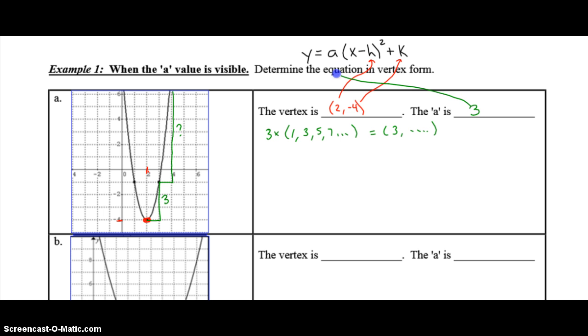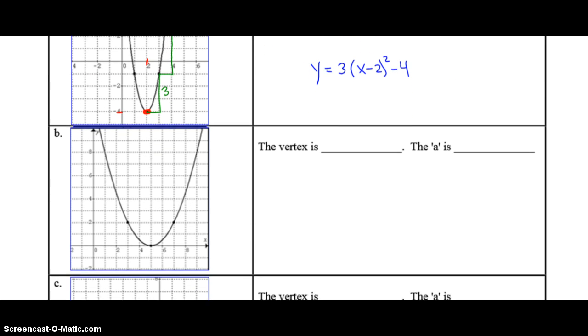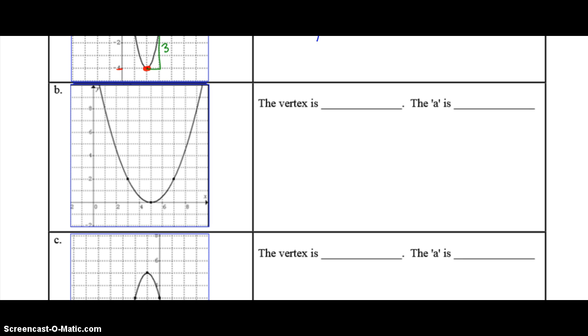That goes in for the a value. So to determine your equation, it's y equals 3x minus 2 squared minus 4. I'll show you another one.